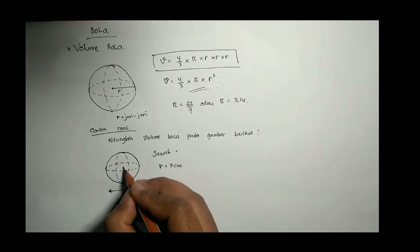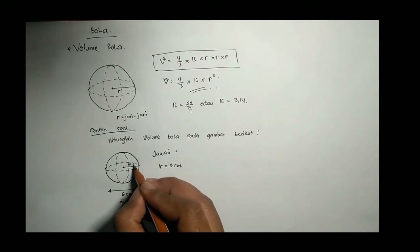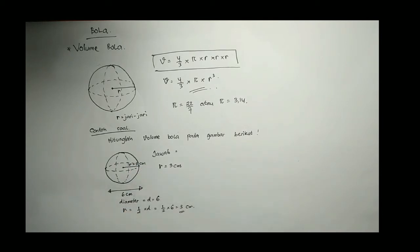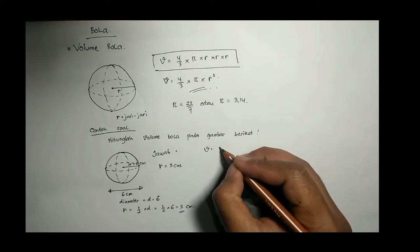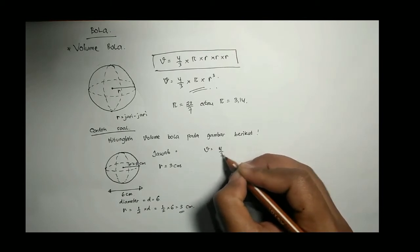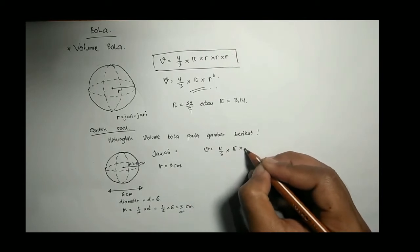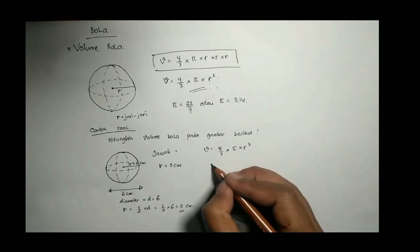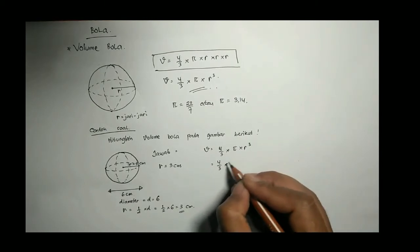Jadi langsung kita tuliskan rumus. Ini R nya 3 ya. Rumusnya seperti yang kita pelajari tadi 4/3 dikali π R pangkat 3.